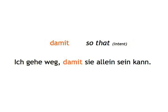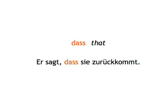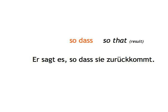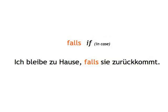Damit — so that (intent): Ich gehe weg, damit sie allein sein kann. I'll go away so that she can be alone. Dass — that: Er sagt, dass sie zurückkommt. He says that she's coming back. So dass — so that (result): Er sagt es, so dass sie zurückkommt. He says it so that she'll come back. Falls — in case: Ich bleibe zu Hause, falls sie zurückkommt. I'll stay at home in case she comes back.